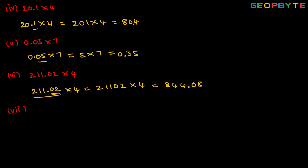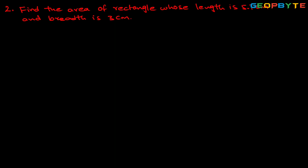Next, seventh one: 2 into 0.86. If we remove the decimal point, we get 2 into 86, which equals 172. There are two digits after the decimal point in the given decimal number 0.86. So we move from right to left by two positions and place the decimal point — that gives 1.72. The result of 2 into 0.86 is 1.72.